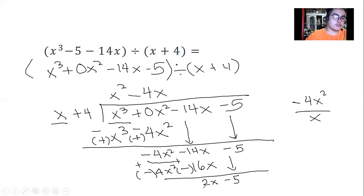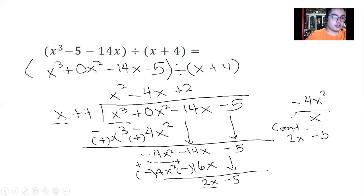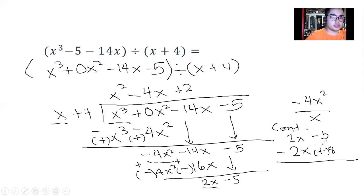The first term here is 2x divided by x, which equals 2. Extending the solution, we have 2x minus 5 as the result so far. Multiplying the last term 2 with the divisor gives 2x plus 8. We change the signs for cancellation: negative 5 minus 8 equals negative 13, which is our remainder.